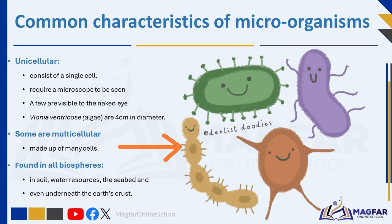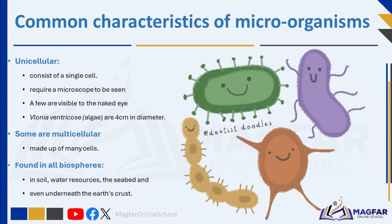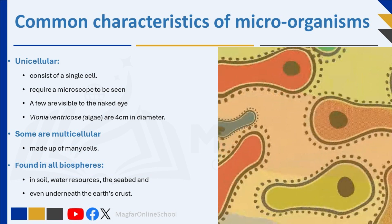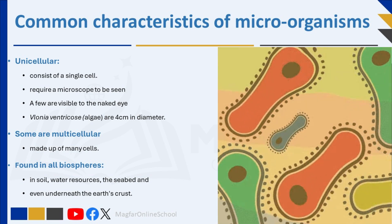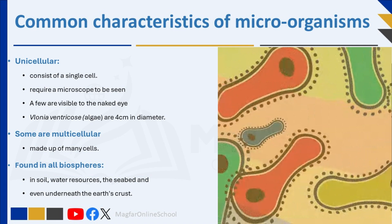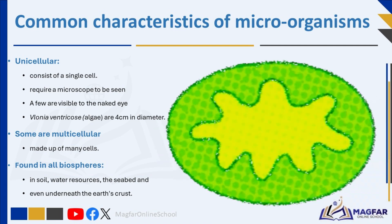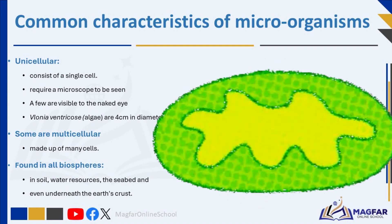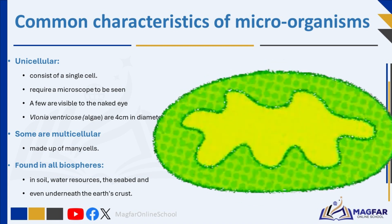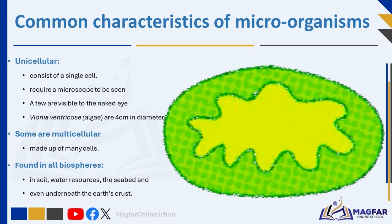Some microorganisms are multicellular, meaning they are made up of many cells. Unicellular organisms generally require a microscope to be seen, though a few are visible to the naked eye — for example, the largest bacterium is just under one millimeter in diameter. The largest unicellular organism in the world is a species of algae called Valonia ventricosa, which can reach up to four centimeters in diameter. Microorganisms are found in all biospheres, including soil, water resources, the seabed, and rocks underneath the earth's crust. Because they decompose substances, they are extremely important in the recycling of nutrients in ecosystems.